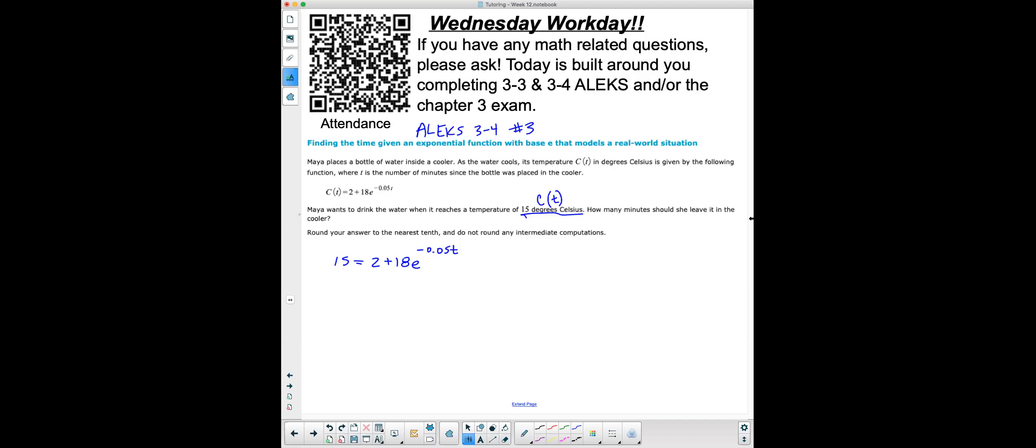Doing it by hand, I would subtract 2 from both sides. So now I'm trying to isolate, I'm going to solve for this T. And so when I subtract 2 from both sides, I have 13 equals 18e to the negative 0.05t.